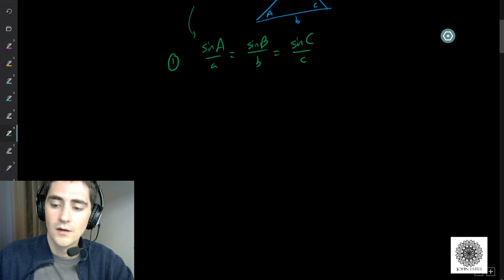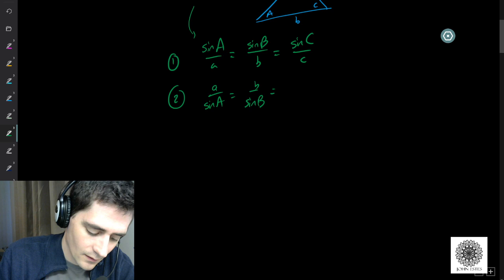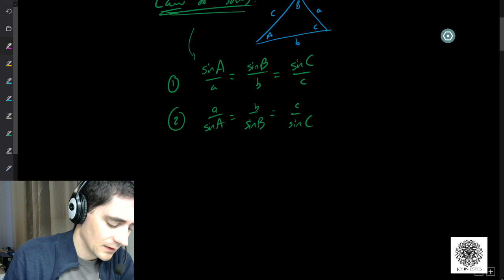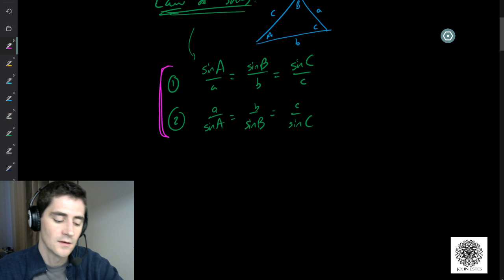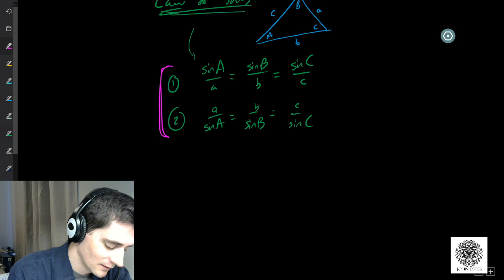Sometimes it's useful to look at the reciprocal version: a over sine A equals b over sine B equals c over sine C. That's not really saying anything new — just the reciprocal of everything. This is the tool we're going to use to solve a triangle, and it comes down to proportionality.